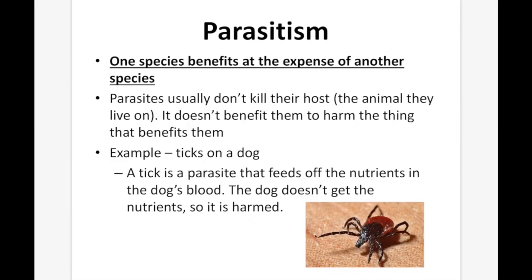Parasitism is when one species benefits at the expense of another species. Parasites usually don't kill their host animal, because it doesn't benefit them to harm the thing that sustains them. For example, ticks on a dog — a tick feeds off nutrients in the dog's blood. The dog doesn't get those nutrients, so it's harmed, while the tick benefits. That's an example of a parasite.